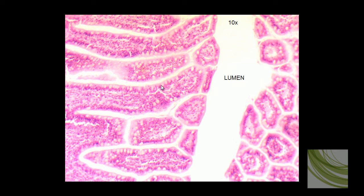We can see these large blank cells. Those are goblet cells. Goblet cells, and we'll see them better at 40X, secrete mucus.